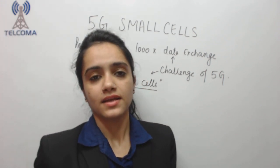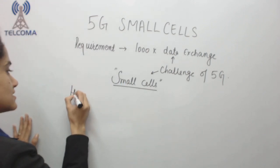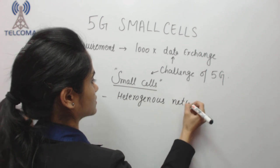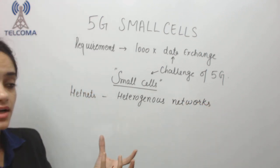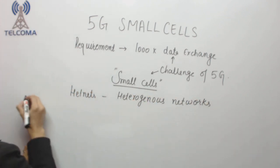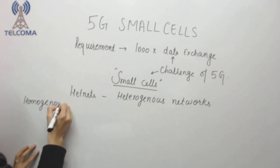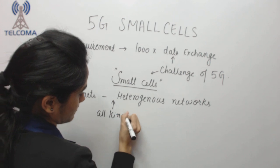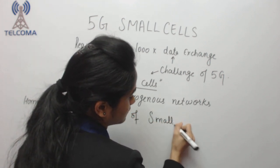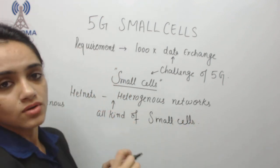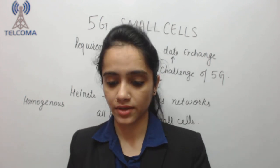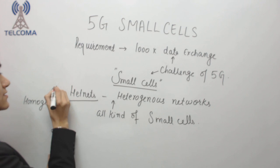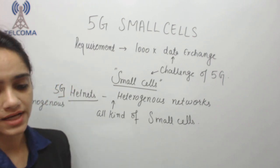In fifth generation, we are using the concept of HetNets — heterogeneous networks. In a previous generation, when we deployed a network with a similar kind of cells, we called it a homogeneous network. Whereas in fifth generation, we are using all kinds of small cells — not similar cells with the same radius all over the planned network. We use different kinds of small cells, forming a heterogeneous network, which is the concept called 5G HetNets.